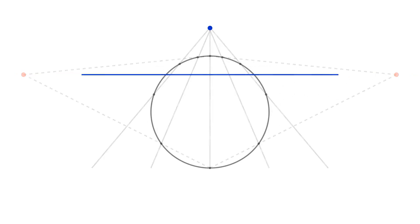The blue line is called the polar of the blue point with respect to the circle, and the point is called the pole of this blue line.